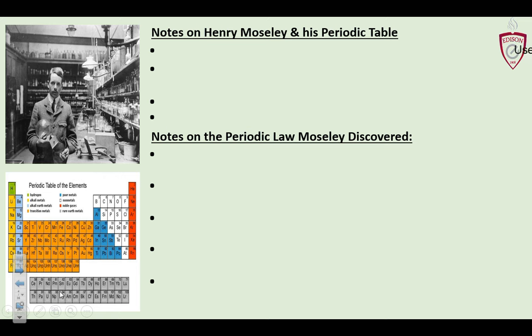So Henry Moseley, a British chemist, used x-ray spectra of the elements and helped discover the existence of the proton — which is kind of a big deal. The periodic table we use nowadays is all based on the proton, and that's thanks to Moseley.